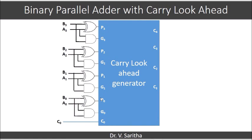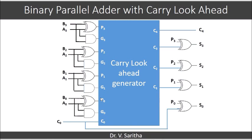C0 is given initially; P's and G's are expressed in terms of A's and B's — specifically P3, G3, P2, G2, P1, G1, P0, G0 — using XOR and AND gates. C4, C3, C2, C1 are the outputs of the carry lookahead adder. Using these, we can generate S0, S1, S2, S3 and C4 all at the same time, so the delay is completely reduced in the binary parallel adder.